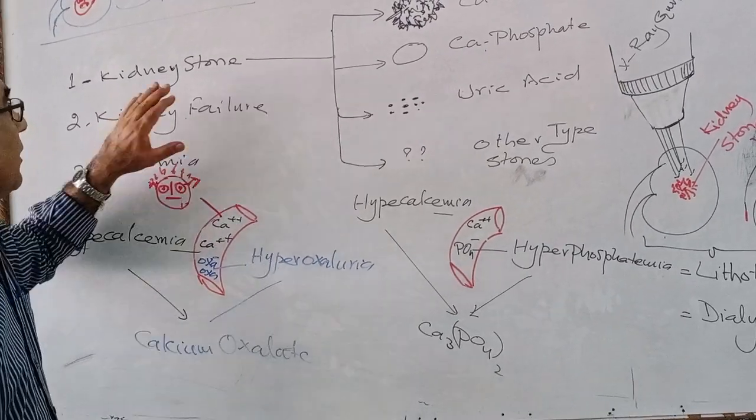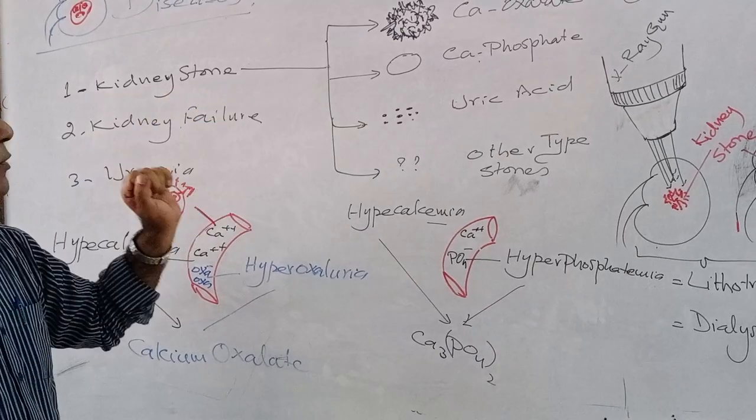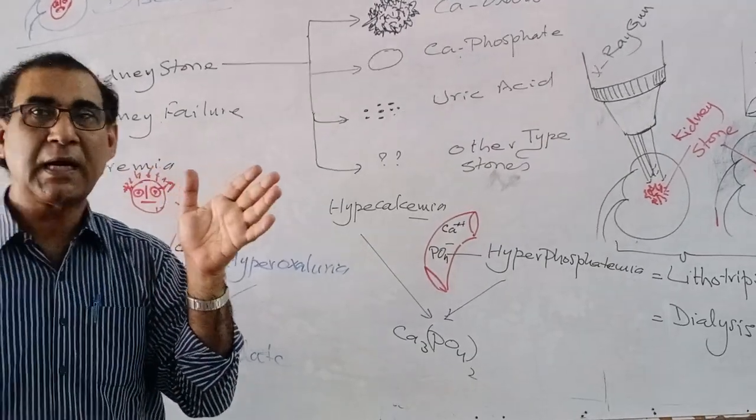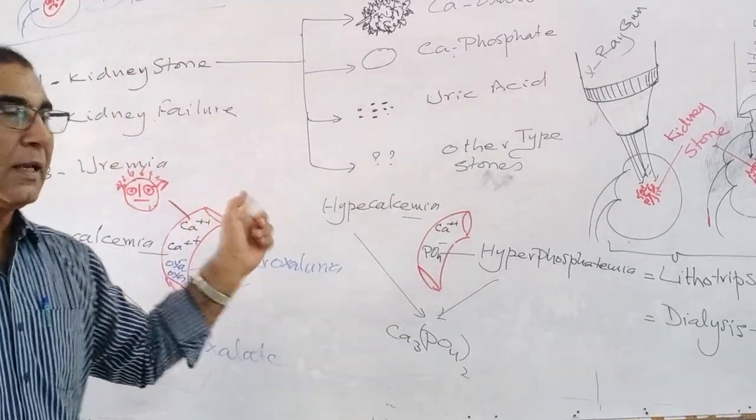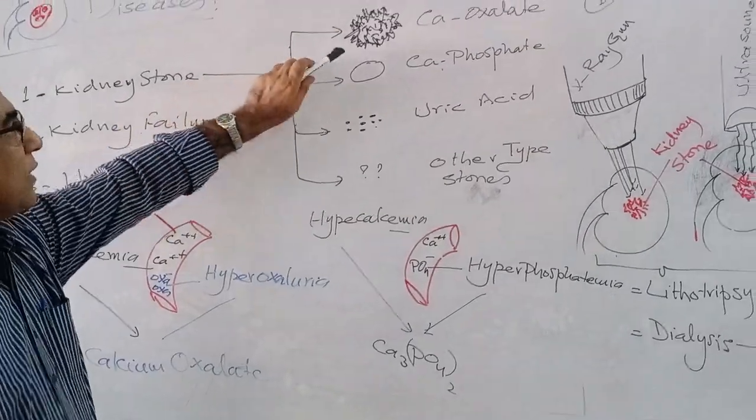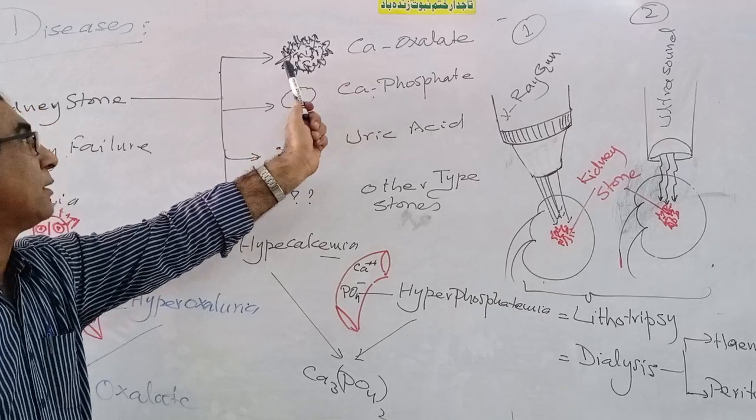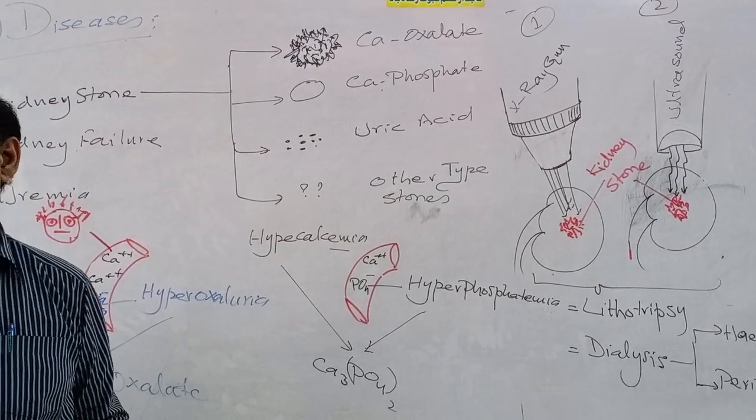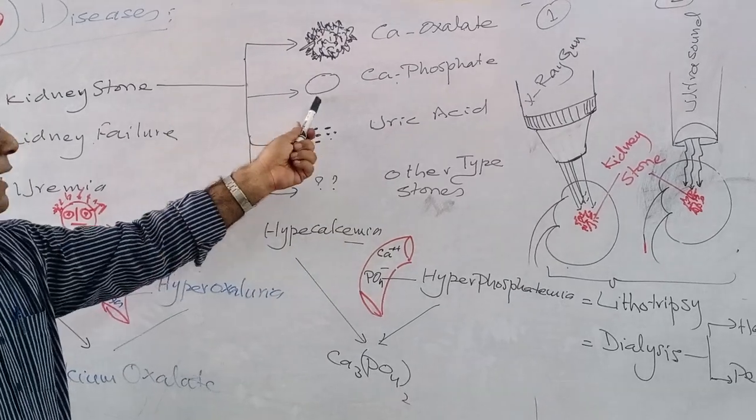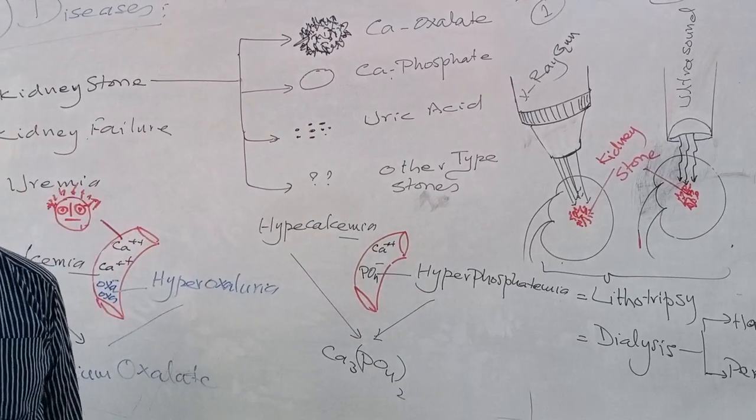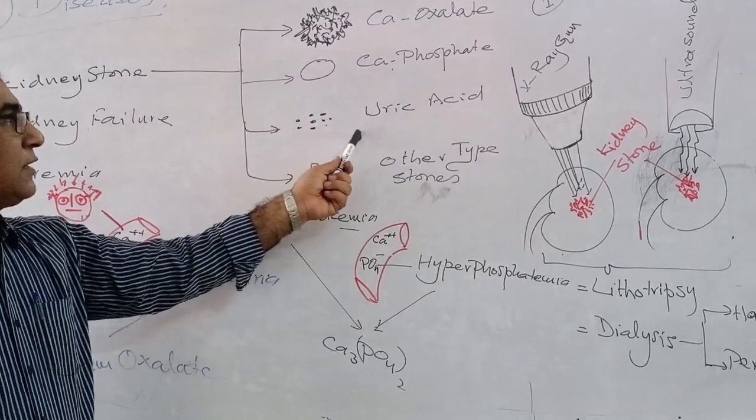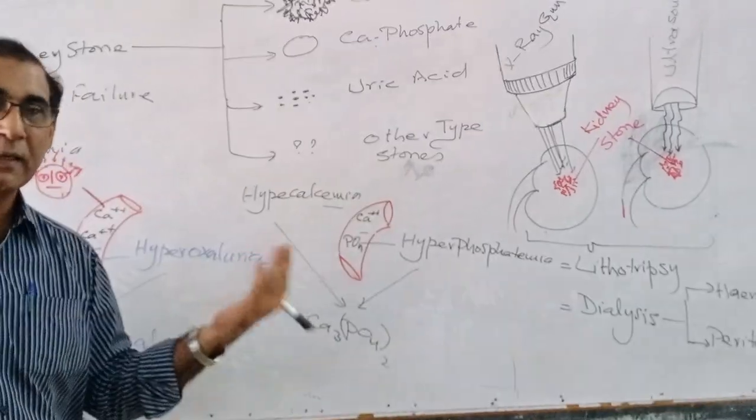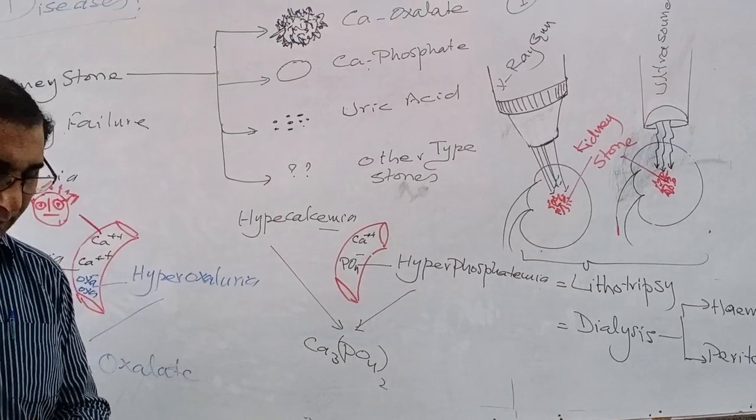Well, if there is a stone formation, there are four or five different types of stone which are formed in the kidney. The one is calcium oxalate. This is the hardest stone found in the kidney. The second type is calcium phosphate. And the third type is uric acid. And the fourth type, others, any type of other stones may be found.